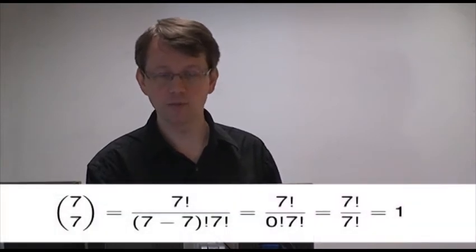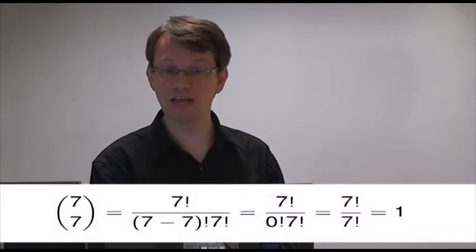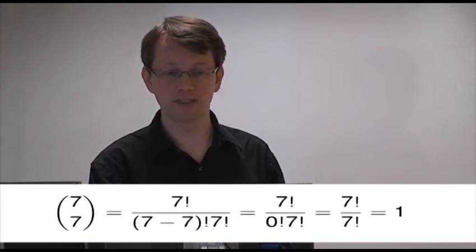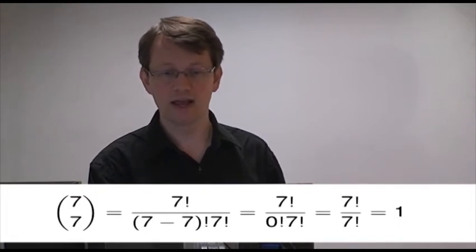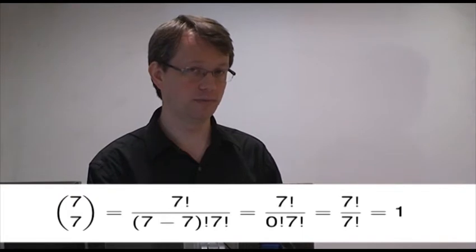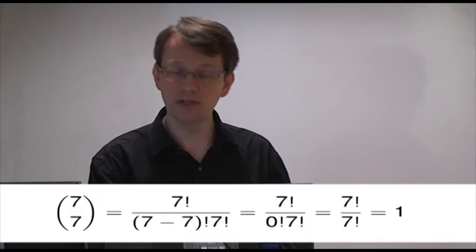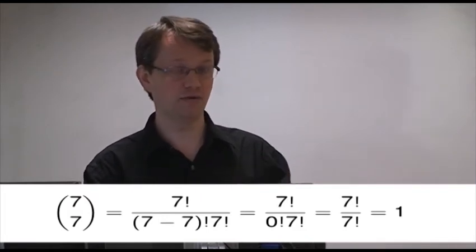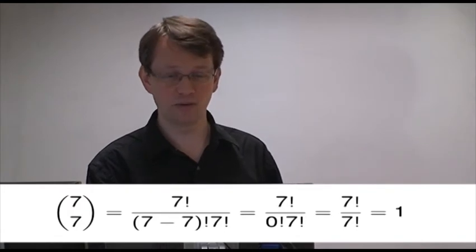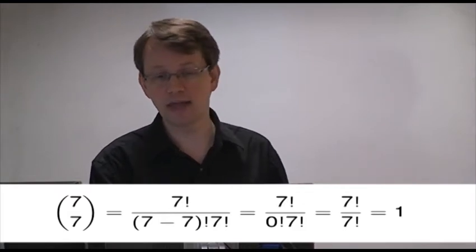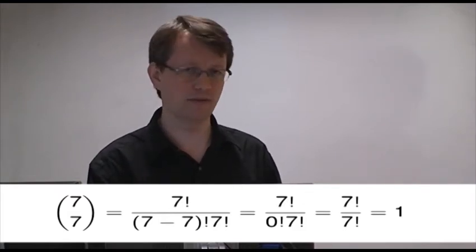If you want to explore things, we should always try extreme cases. What happens if one of the numbers is 0, or when you've got two numbers the same? So 7 choose 7: we end up with 7 factorial over 0 factorial times 7 factorial. Now 0 factorial is actually equal to 1 — try it on your calculator, and then try to find out why that makes a decent definition. So we end up with 7 factorial over 7 factorial, which is equal to 1.